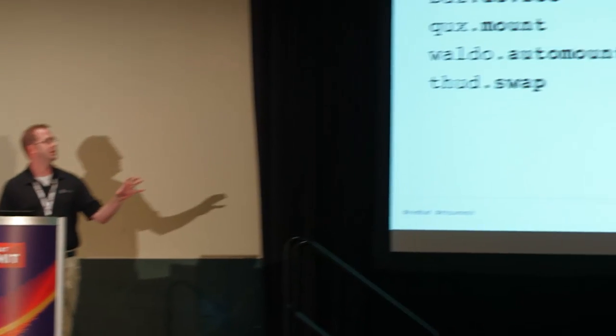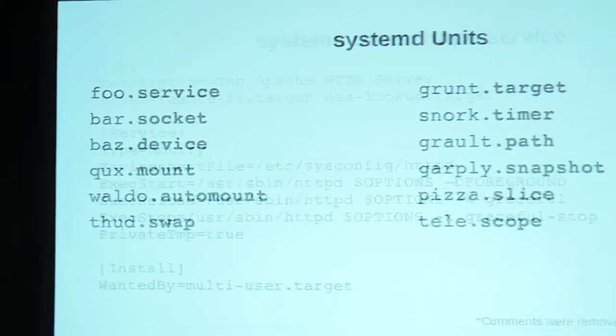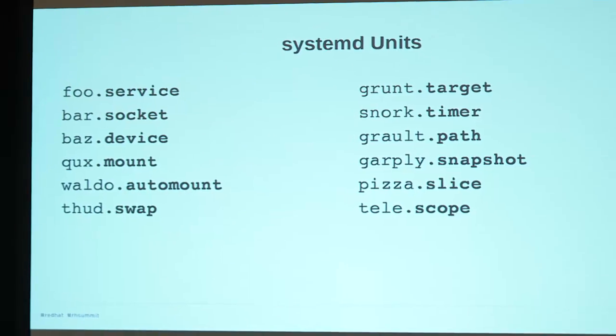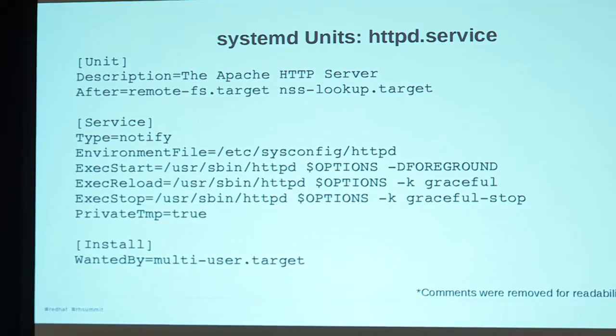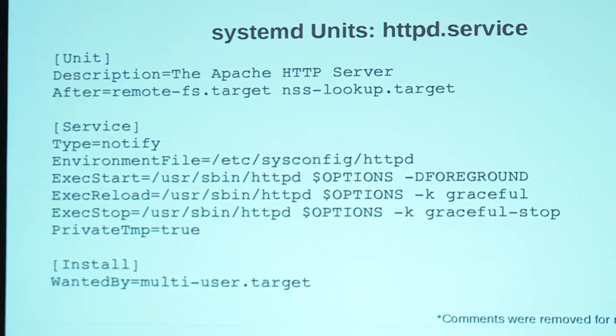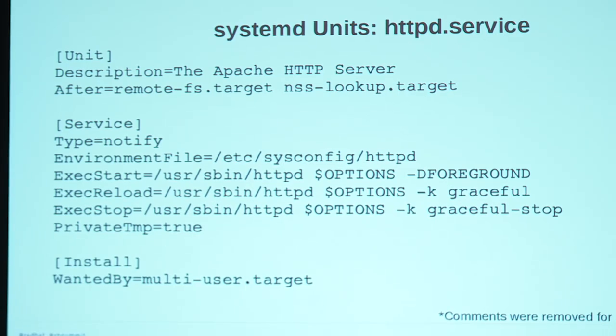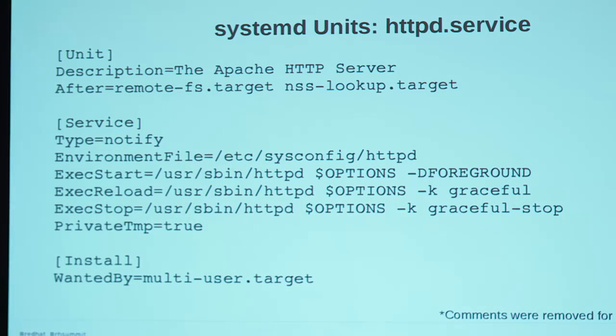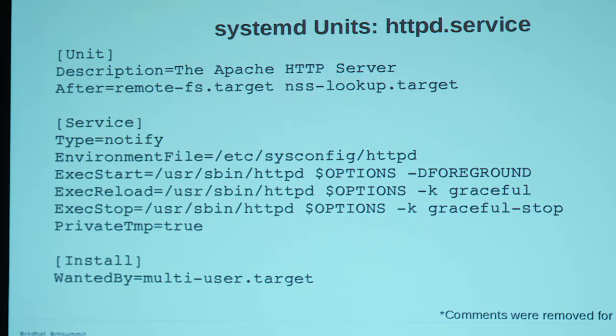So, units. That's everything that systemd is watching. The naming convention is name.type. There are 12 kinds, and today we're really going to focus on the top four. Here's a quick look at what a unit file looks like — it's really short and easy to read, inspired by the INI file format. Clear descriptions, and that's it.